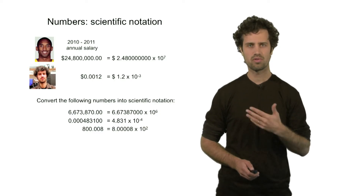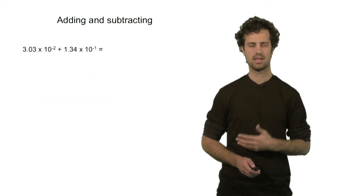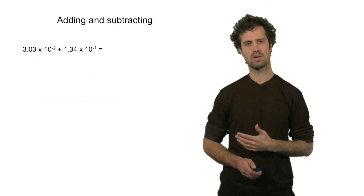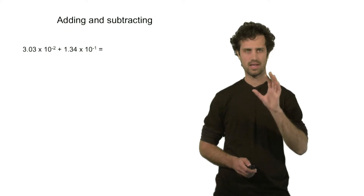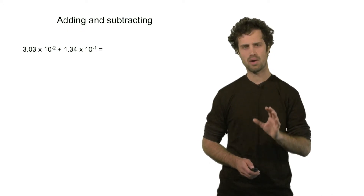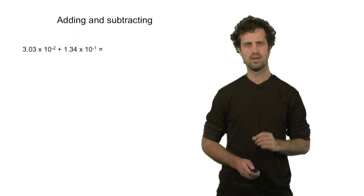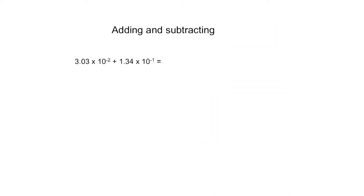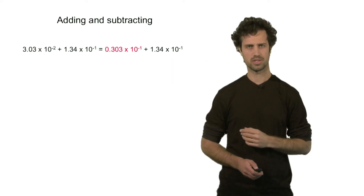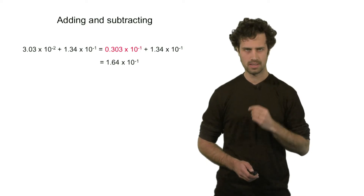Let's now use scientific notation and perform a couple of mathematical operations. Let's look at adding and subtracting. Let's say I want to add up two numbers — the two numbers right here. These two numbers have different powers: the first number is to the power minus 2, the second number is to the power minus 1. What you can do is raise the power of the smaller number up to the power of the larger number. In this case, 3.03 times 10 to the minus 2 is the smaller number. I raise it by moving the decimal point one position, giving 0.303 times 10 to the minus 1. Now the powers are the same, and I can add them up to get 1.64 times 10 to the minus 1.